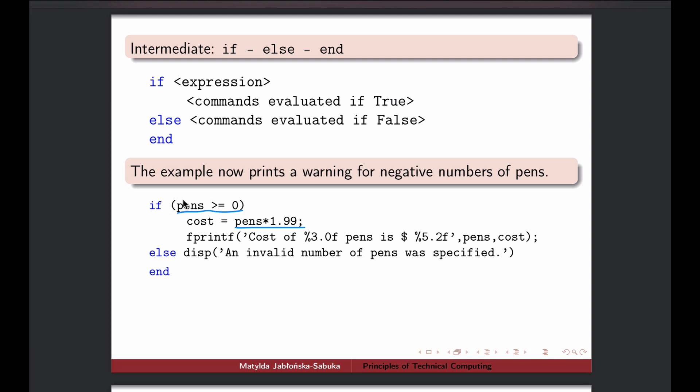But otherwise, so if not this, so if the opposite case, we would like to say that an invalid number of pens was specified, because we cannot buy minus 5 pens. We can only buy positive amounts. So this is where else comes in. Else is like otherwise, so this will only be done if this first part has not happened, so if it wasn't true.